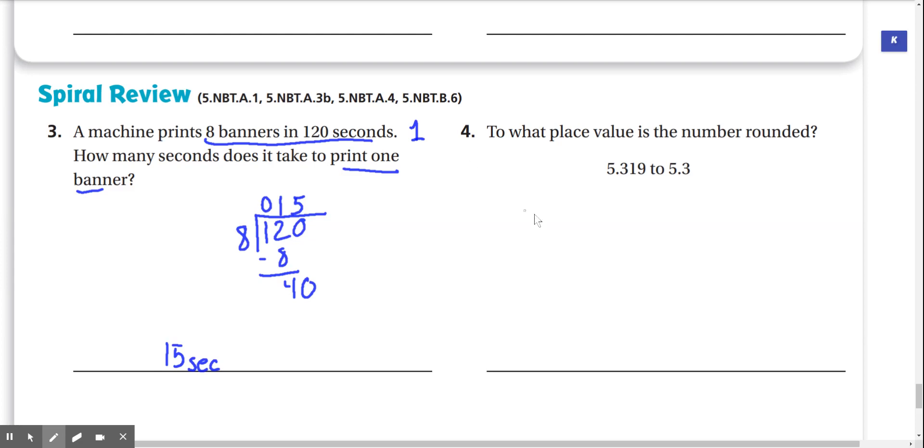Number 4. To what place value is the number rounded? 5.319 to 5.3. When we look at the rounded number, we see that it only has numbers up to the 10th place. So we know that it was rounded to the 10th place because there aren't any more numbers. And if we round the unrounded number to the 10th place, we've got to look at the 100th place. And it's a 1. The 1 is less than 5, so this would turn into 5.3, which is what our rounded number is. So the place value the number is rounded to is the 10th place.